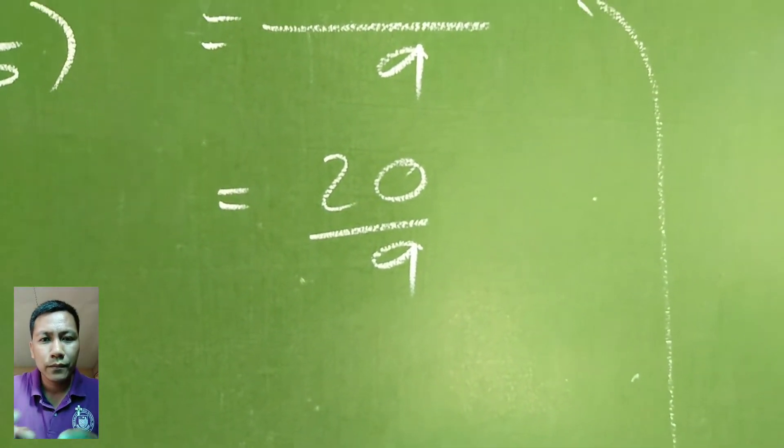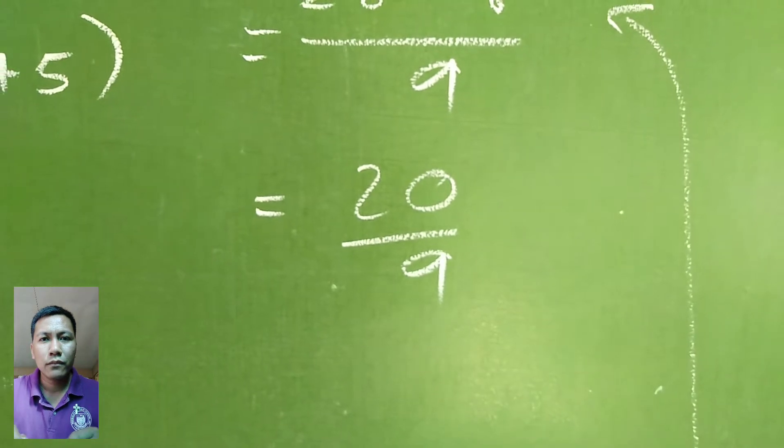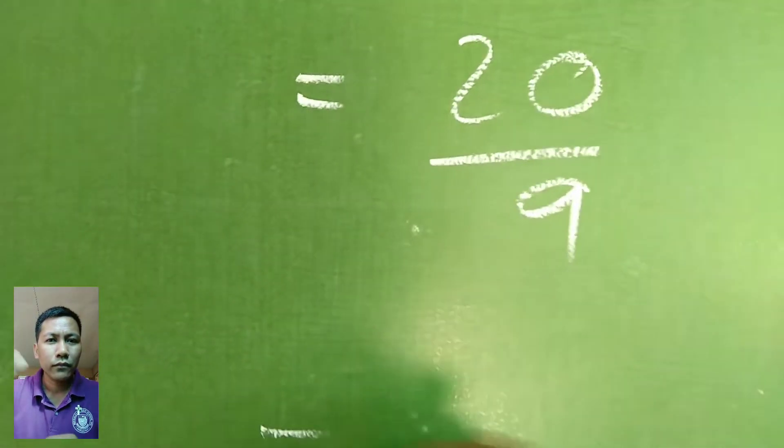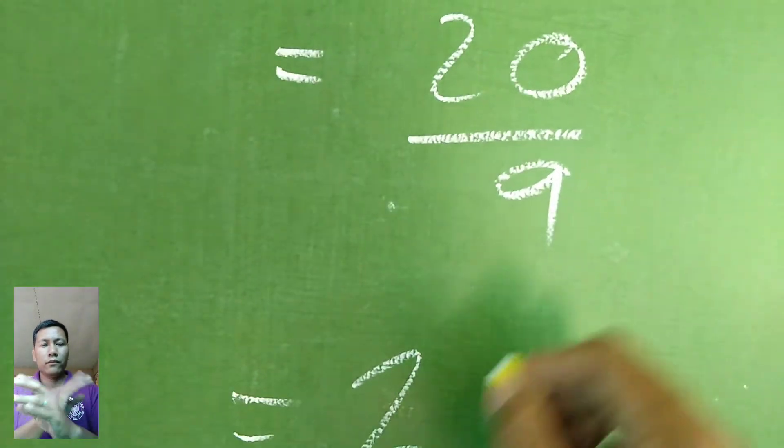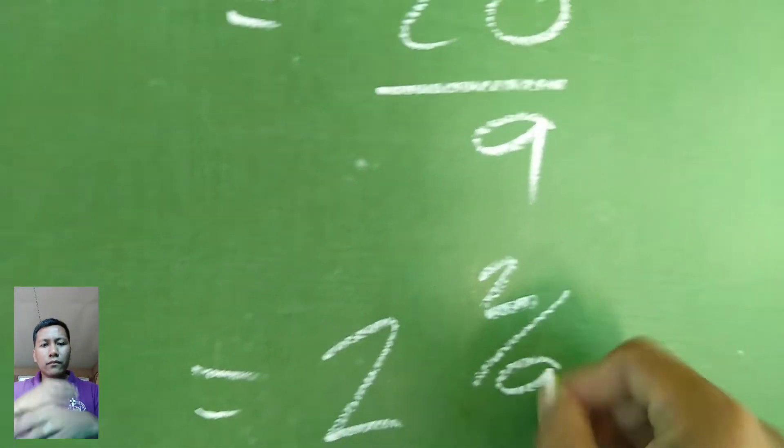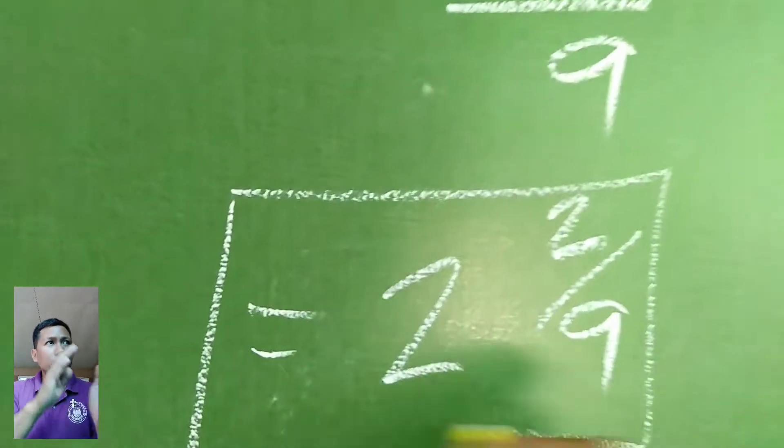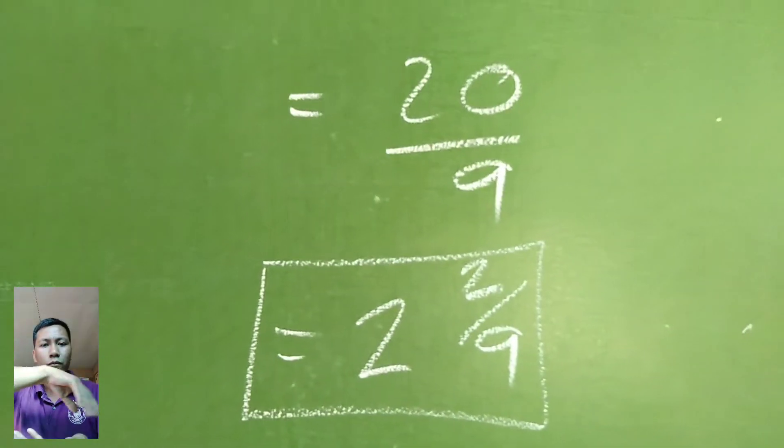Some math teachers, that's the answer they want. But some other teachers want proper or mixed numbers. So we have 20 divided by 9, that is 2 and 2 over 9. This is the final answer.